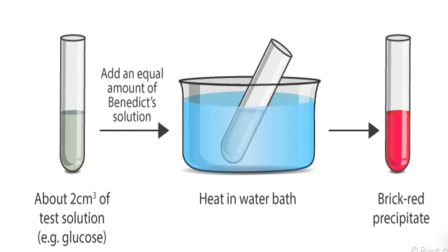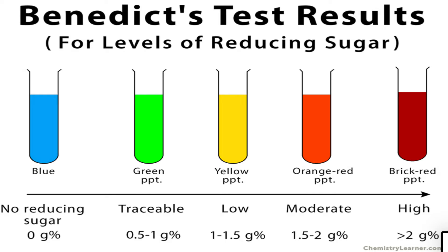After heating in a water bath, you will see a brick red precipitate. Benedict's solution also varies in color depending on the concentration of sugar: no sugar gives blue, a trace gives a green precipitate, low sugar gives yellow, moderate gives orange, and high concentration gives brick red. You can remember this by thinking of how dark the color becomes — it gradually darkens as glucose concentration increases. In general, the presence of glucose will give you a brick red precipitate.